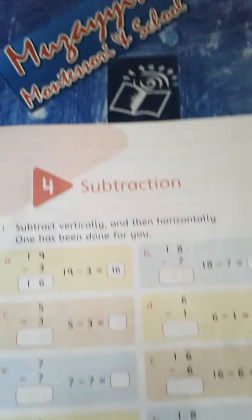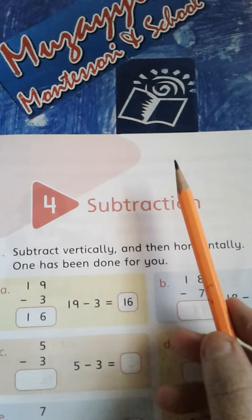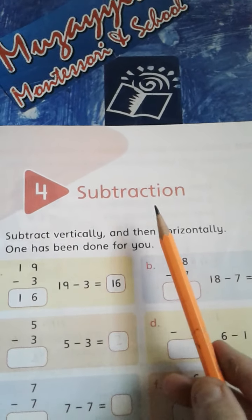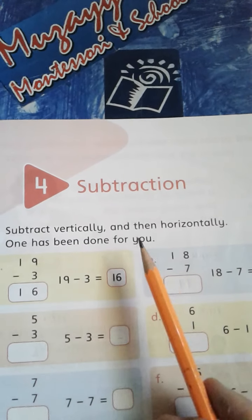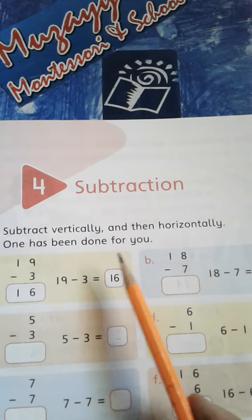So kindly open page number 71 and write date and CW on the top. Chapter number 4, subtraction. Subtract vertically and then horizontally. One has been done for you.